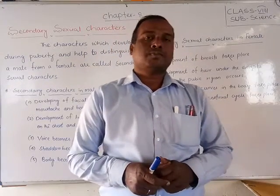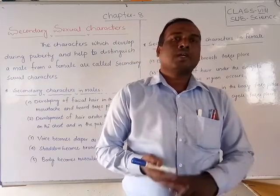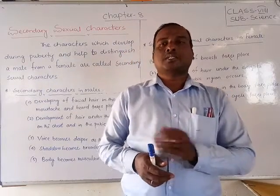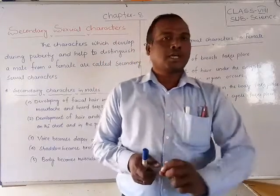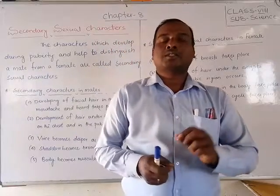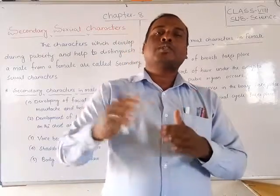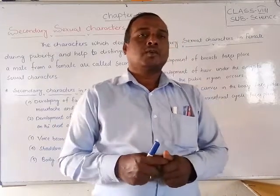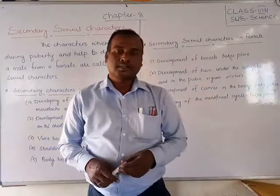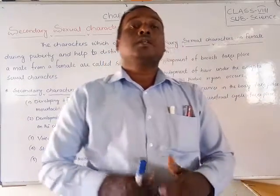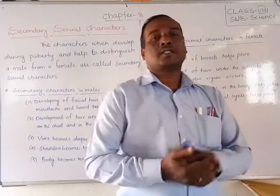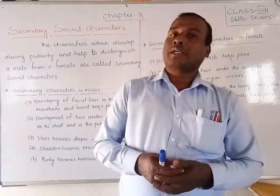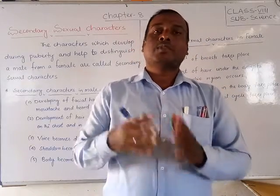I already explained the different stages of the human life cycle. From birth to two years is called the infancy period. From two to eleven years is called the childhood period. From eleven to eighteen or nineteen is called the adolescent period, also known as the teenage years. Eighteen and above is the adult period. During puberty, sexual development increases and secondary sexual characters are developing.